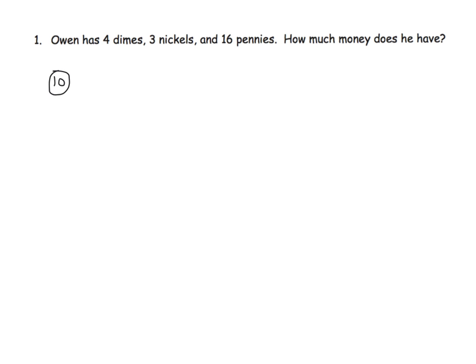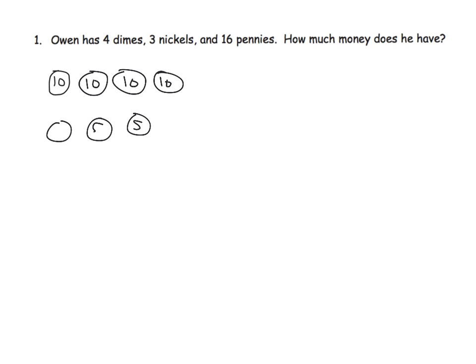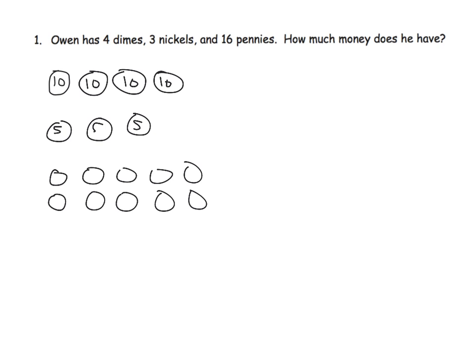So here's 10 cents, and let's do another one, and another one, and another one. There are my dimes, and now I want my nickels. We're using representations — we're no longer being so literal with actual coins — and then 16 pennies. Now I'm going to organize this in 10-frame form.